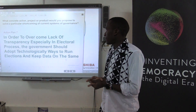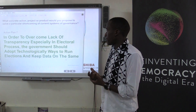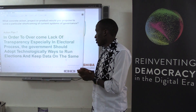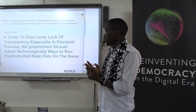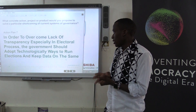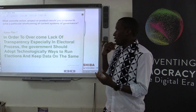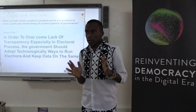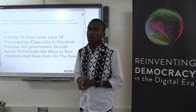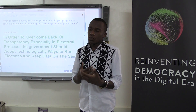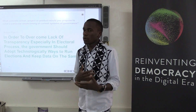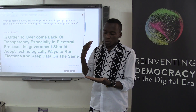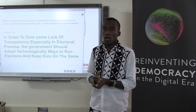The action I came up with in this plan is that, in order to overcome lack of transparency — especially in electoral processes — the government should adopt technology-based ways to run elections and keep data on the same. I believe if you hold an election using technology, it will help in a big way in Africa to shape the next steps in ensuring transparency and accountability of the electoral process.